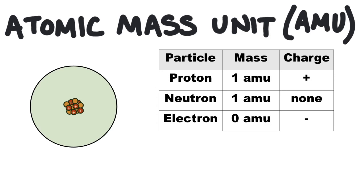In AMU, a proton has a mass of one. The neutron has a mass of one. And remember I said that the electron is so small compared to the proton and neutron? Well, it's so small that it has a mass of zero AMU.